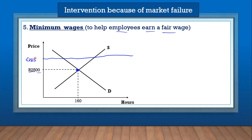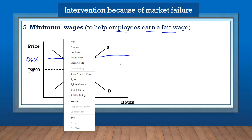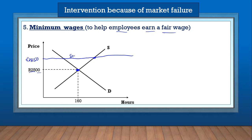The minimum wage currently in South Africa is 3850 rands, so no employer can pay employees less than this. The impact of the minimum wage is the same as the minimum price: there will be more supply of workers in the market than are demanded by employers, so there will be a surplus of workers — too many workers — because of the minimum wage.